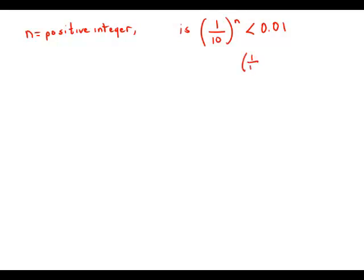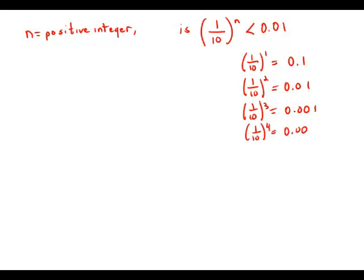If we take (1/10)^1, that's 0.1. (1/10)^2, that's 0.01. (1/10)^3, that's 0.001. (1/10)^4, that's 0.0001. And I think you see the pattern here.